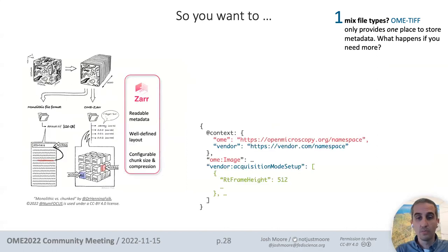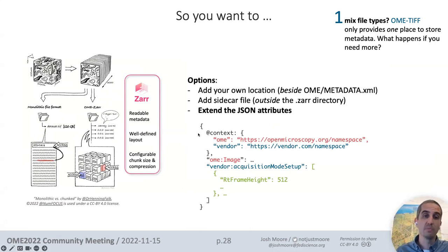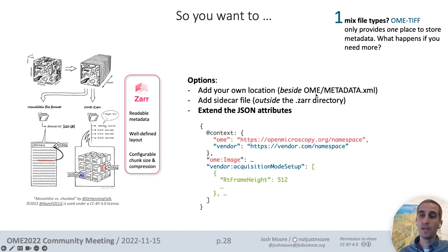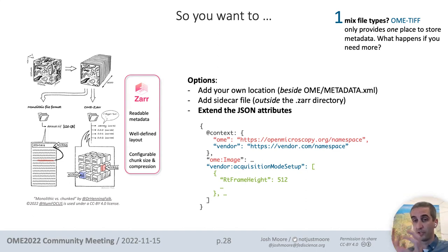Zarr's metadata representation lets us encode exactly this block of JSON. That's probably the best way forward, but there are other options - always the option of adding a sidecar file beside the Zarr directory, or other locations within the Zarr directory, like what Bio-Formats-to-raw does with the OME metadata XML file. We have choices we can make, and hopefully this would allow multiple tools and multiple vendors to all structure their information into one single file.